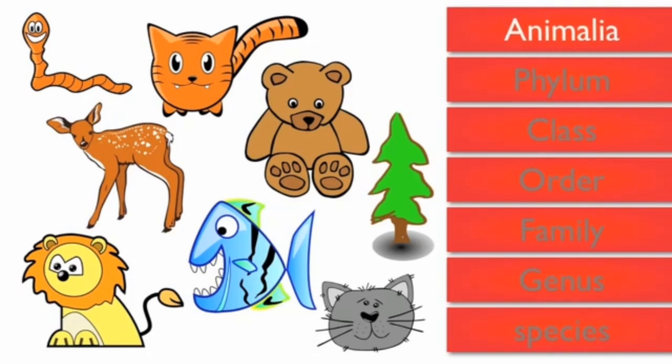The first level is kingdom, the kingdom of lion is animalia, so the tree in here is eliminated.